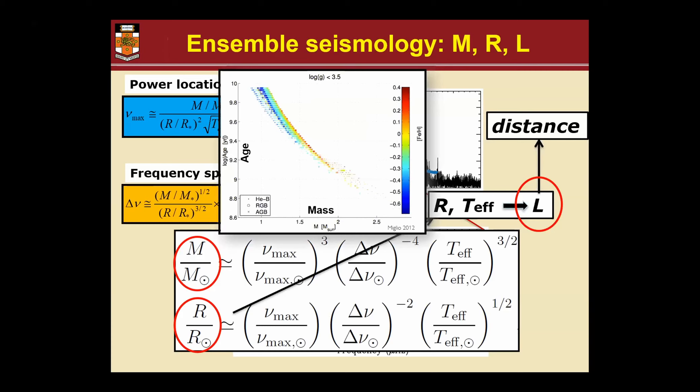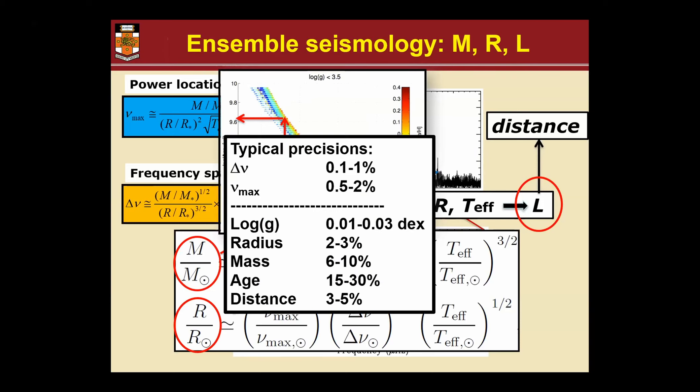For giants in particular, when you have a good handle on mass and we have that from seismology, and we get metallicity from photometry or spectroscopy, you actually have a good handle on age. These are the kind of uncertainties you will get on your stellar parameters using asteroseismology, because these frequencies can be determined incredibly precisely.